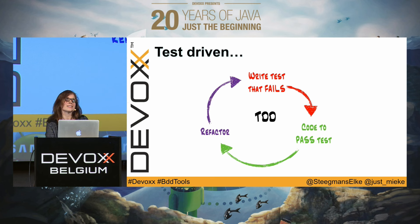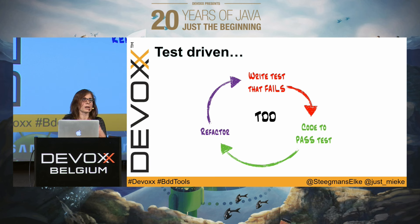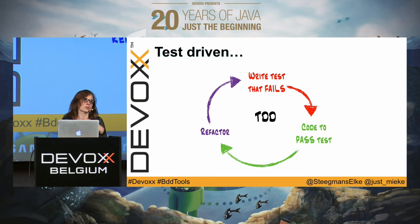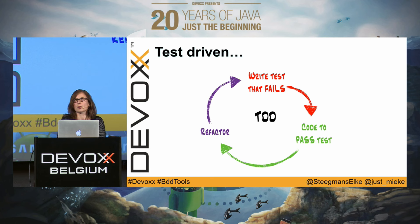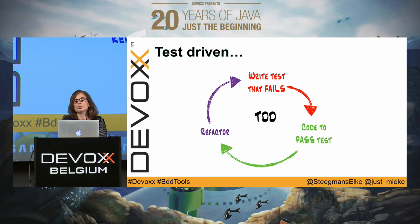Writing your test first forces you to think about what the software is supposed to do. Then only then do you start writing the code, you refactor, and the process continues. We noticed it wasn't easy to introduce this. We would love our students to always work this way — each assignment starts like that — but that proved to be impossible because there's not enough time, and sometimes it's too technical, especially for first-year students. So about three years ago, we were sitting here dreaming.